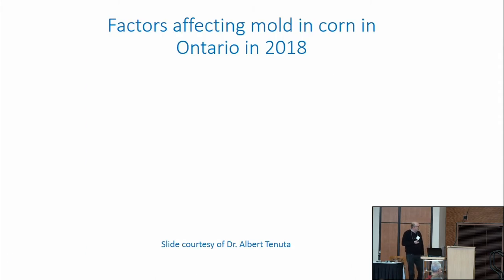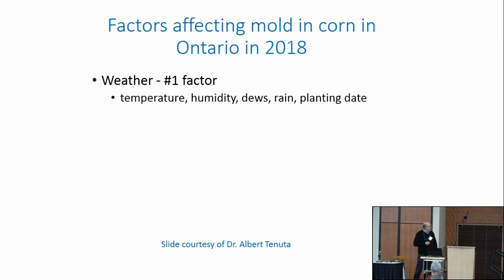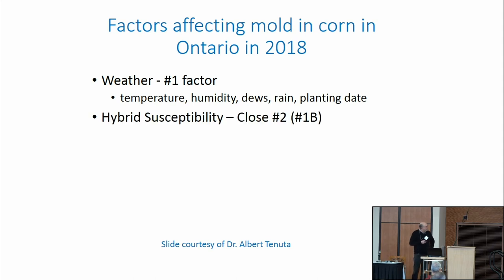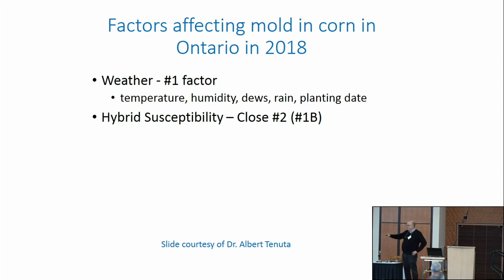A colleague, Albert Tenuta in Ontario, reported incredible problems in southwestern Ontario this year. In a thorough survey, by far the number one factor was the weather — the coincidence of wet weather with silk emergence and continuing wet conditions through delayed harvest in the fall. Hybrid susceptibility was a close second. Some of the most widely grown commercial hybrids appear to be just a little more susceptible than many others, which accounts for a lot of what's coming in.